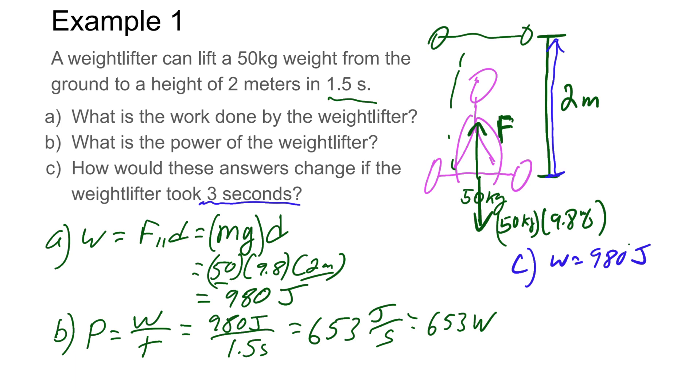Now the power we need is going to be less, because earlier we did it at 1.5 seconds and now we're doing it at 3 seconds. So this would be 980 divided by 3, or the power would essentially be half of what we got. So 653 divided by 2 gives us about 327 watts.